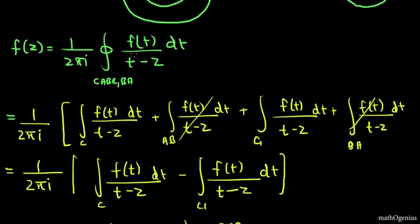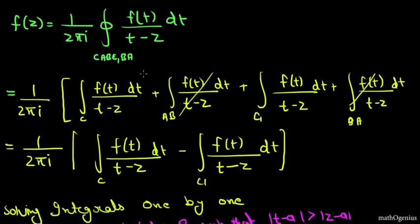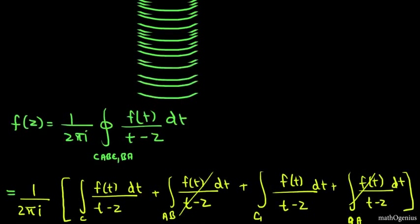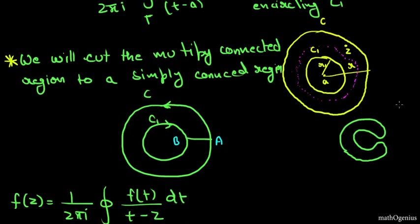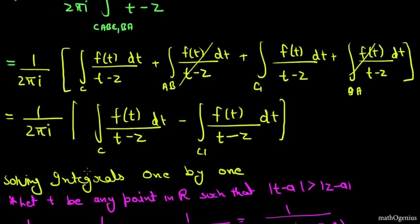We can expand this closed line integral into different line integrals. Note: in the Cauchy integral theorem proof, I made a small mistake writing the closed circle symbol on curves that are actually open — please avoid that mistake. Breaking this into C, AB, C1, and BA: since AB and BA are opposite they cancel, and we reverse the direction of C1 from positive to negative, giving a negative sign.